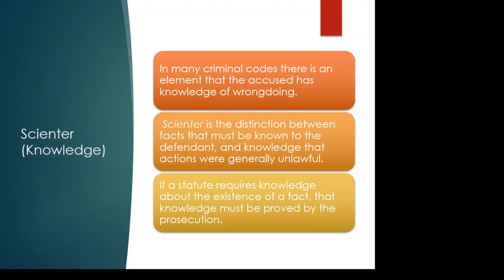Scienter — in many crimes there's a requirement that you have actual knowledge of wrongdoing. It's the distinction between what you have to know and the knowledge that what you were doing was bad. If I take a coat and really believe it's mine — I hung up a coat at a restaurant and there were two identical coats and I took the wrong one — I don't have any scienter. But if I go in and say 'I don't want to get wet, I'm just going to take this coat' — I have scienter. I know I don't own that coat; I'm intentionally taking it. Usually, scienter makes a crime worse.